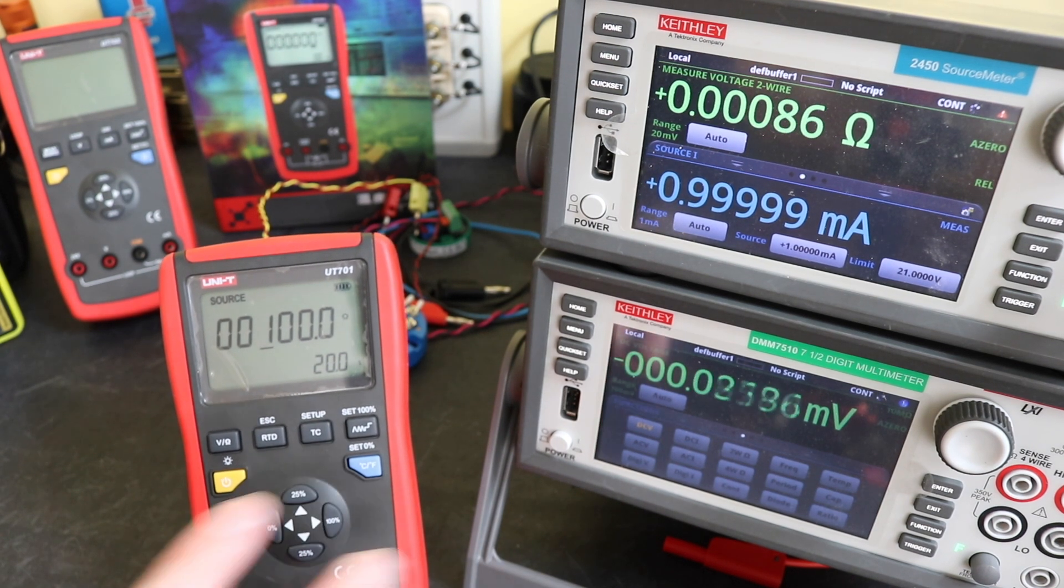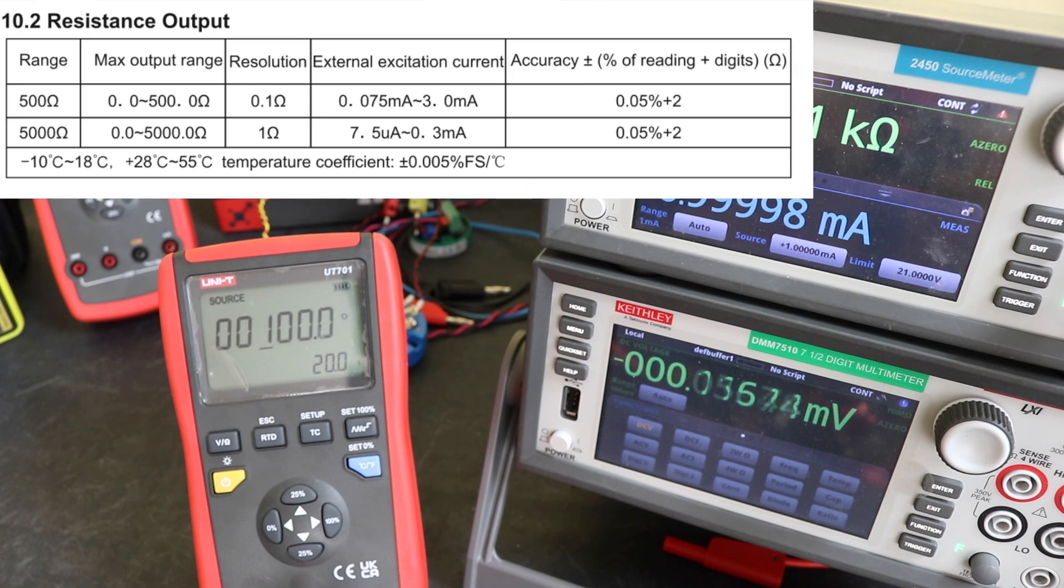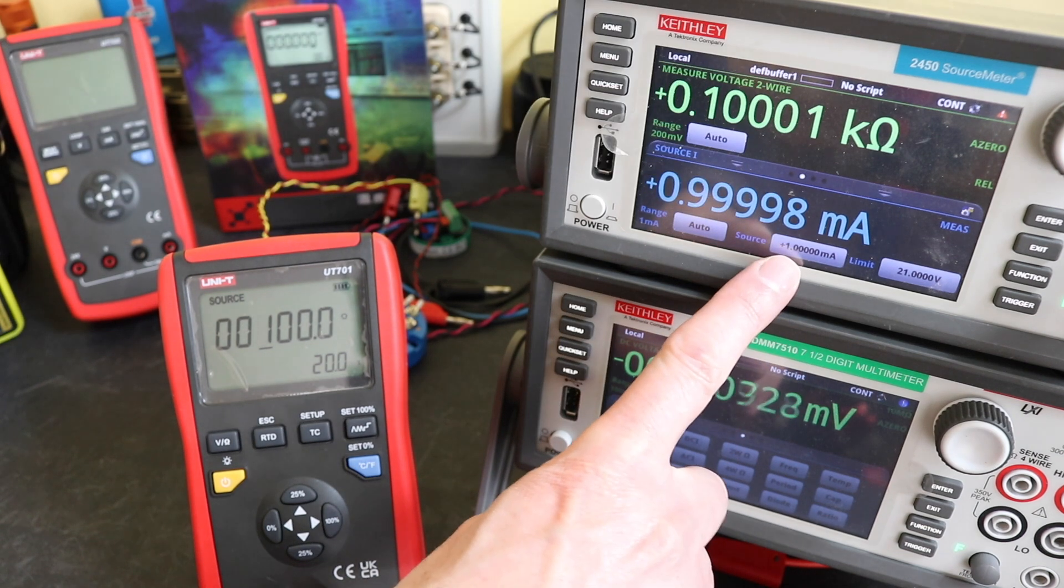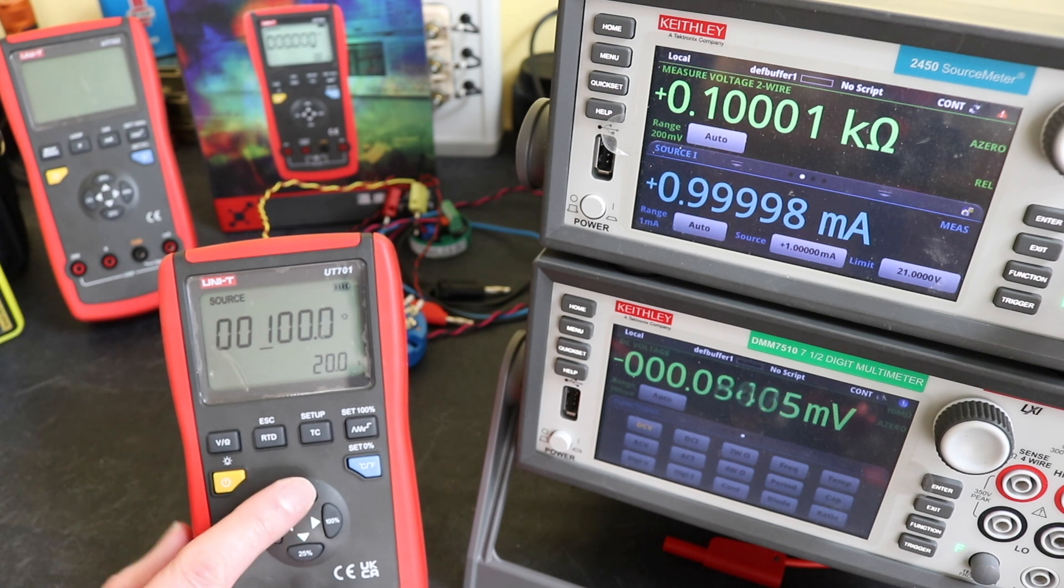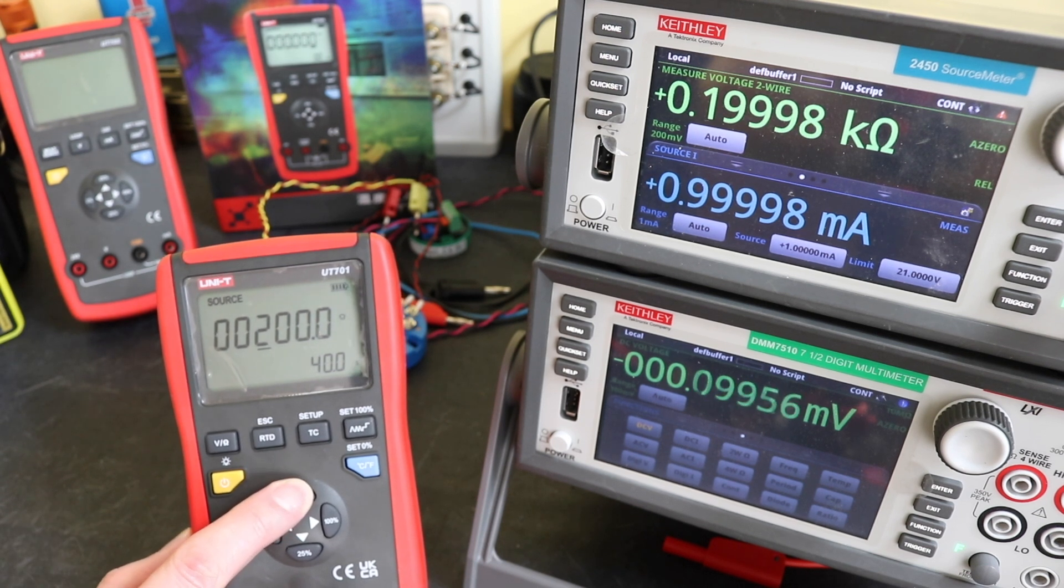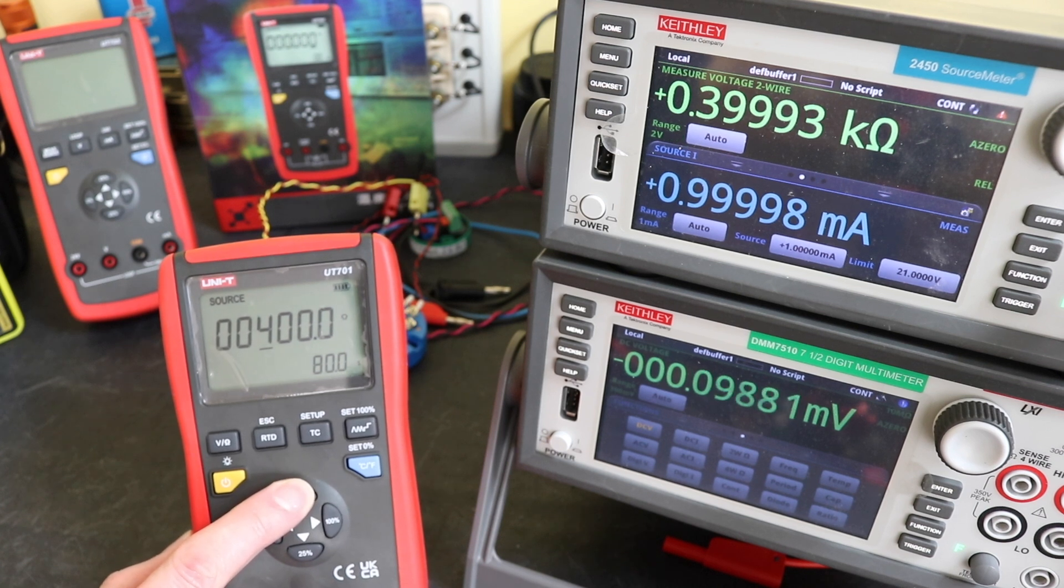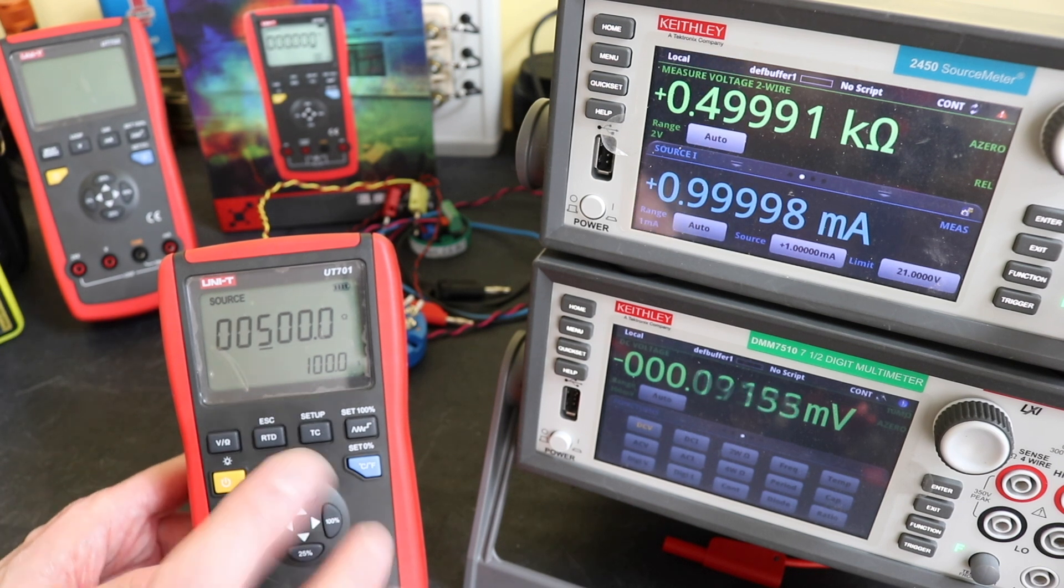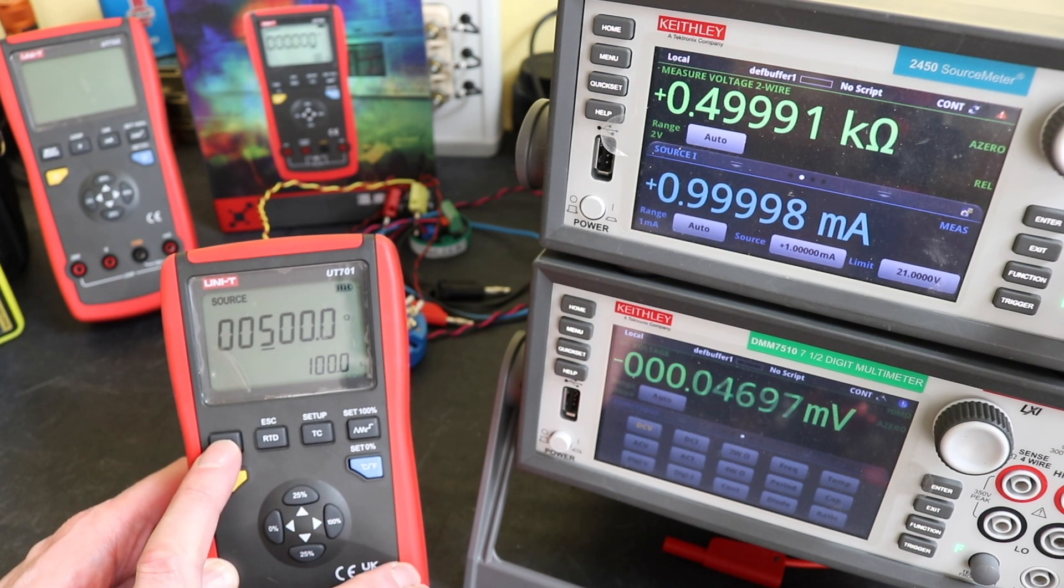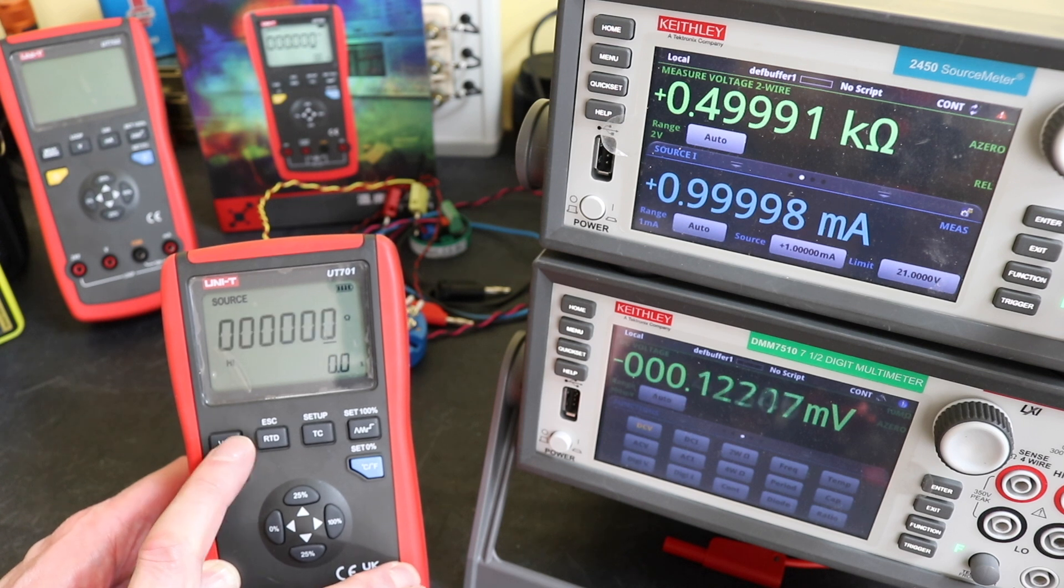Now as with some of these other units you do require an excitation current to get the resistance function to operate. You can see I've set it up to one milliamp on the 2450 source meter. You can see there we've got 100 ohms no problems. Our base range goes up to 500 if I remember correctly. Yes that's our lowest range so that can only go up to 500 ohms. We can see it's done there. We need to hit the volts ohms again to go up to our next range.